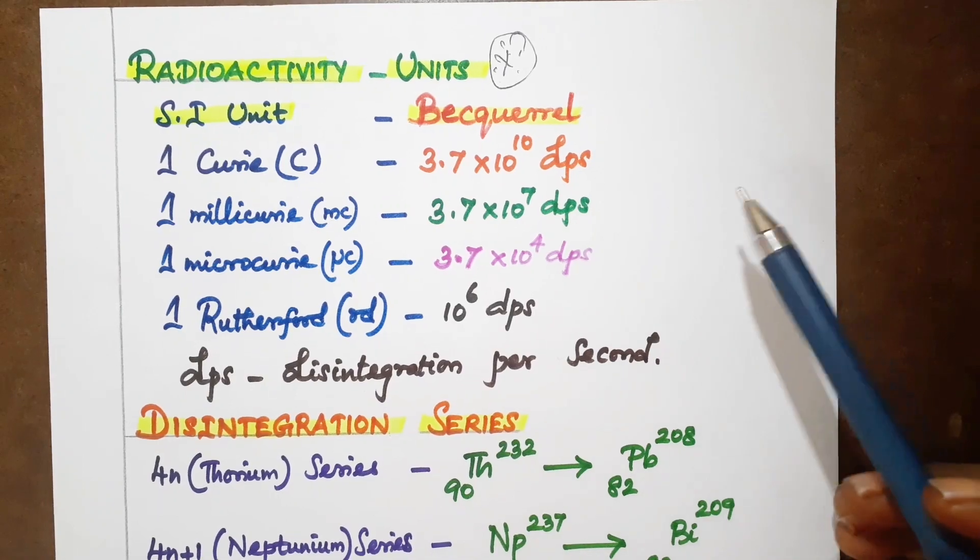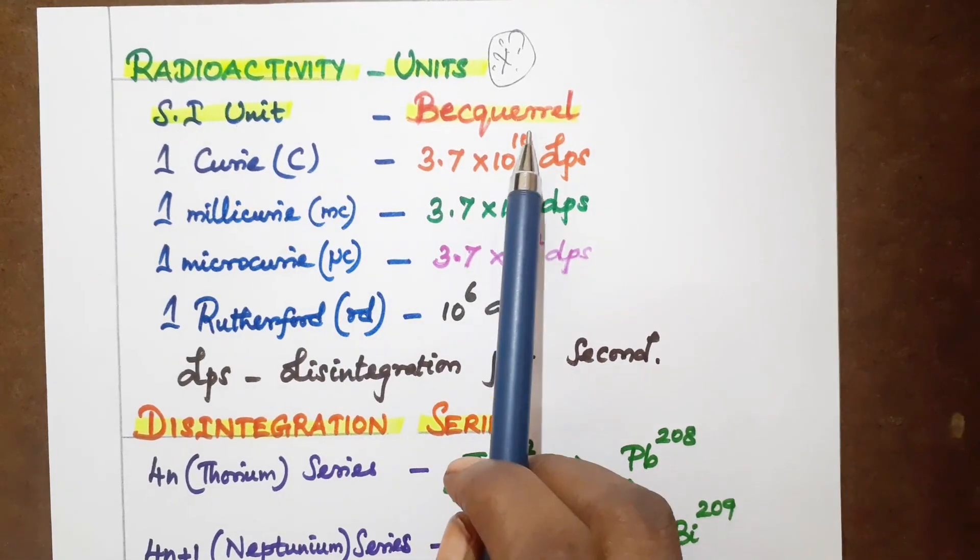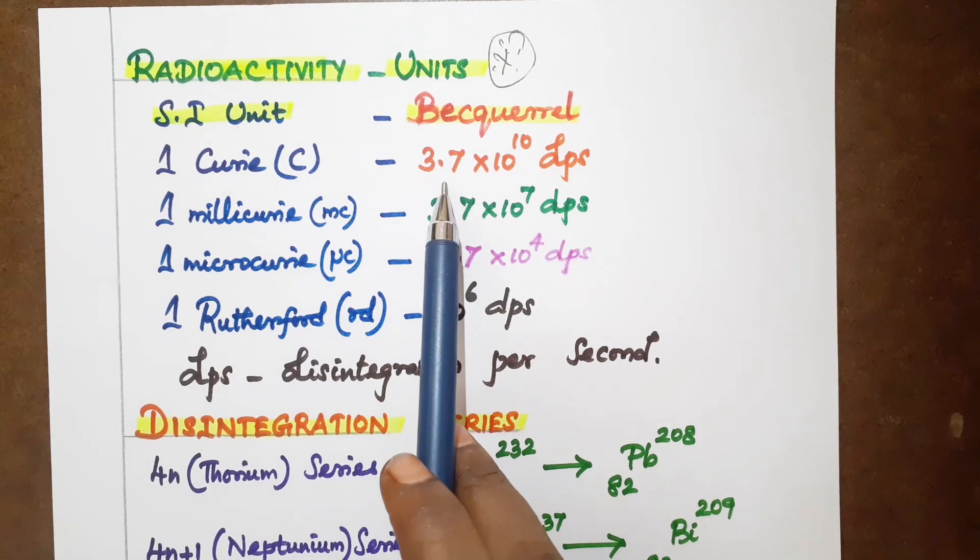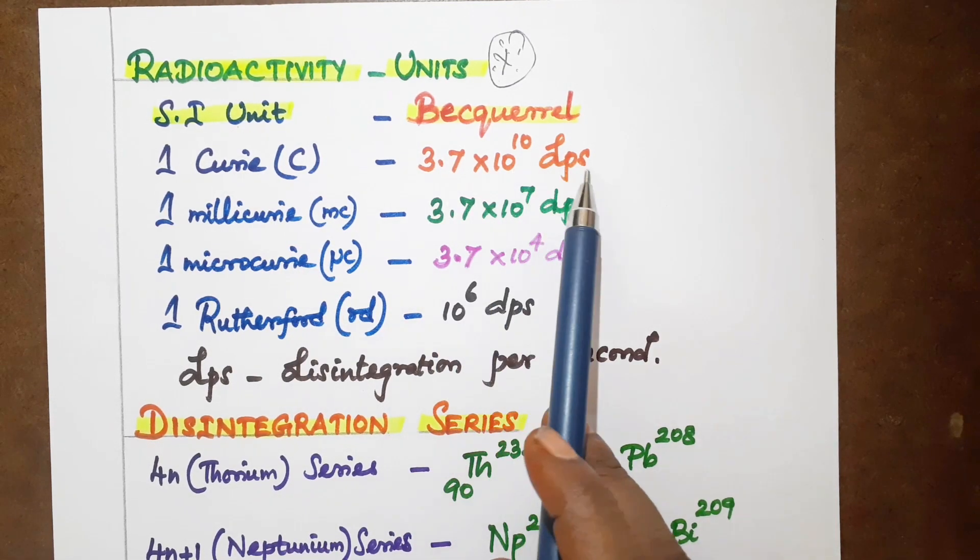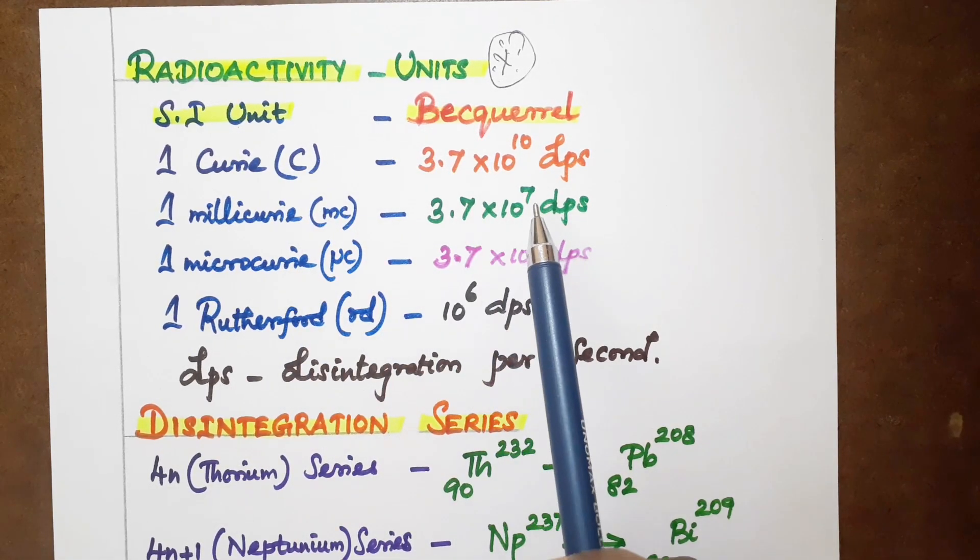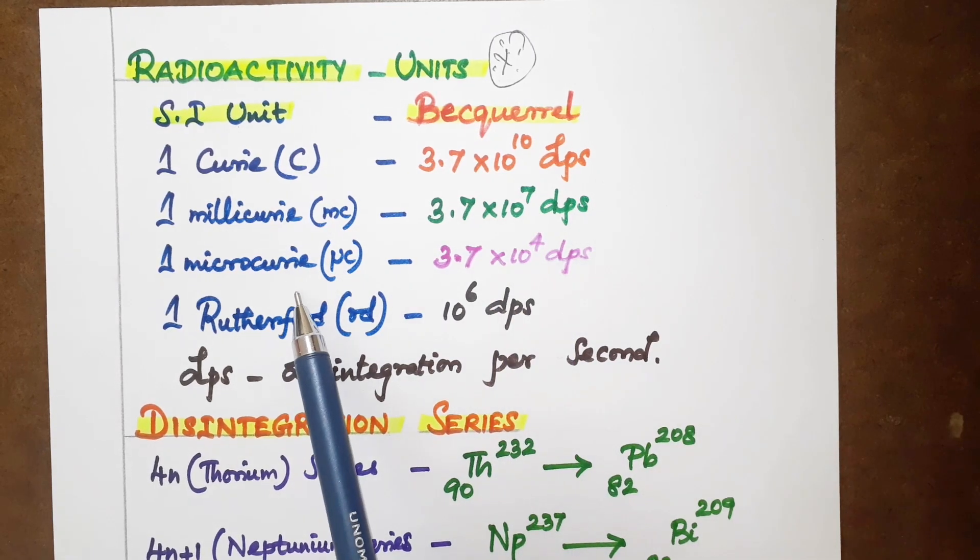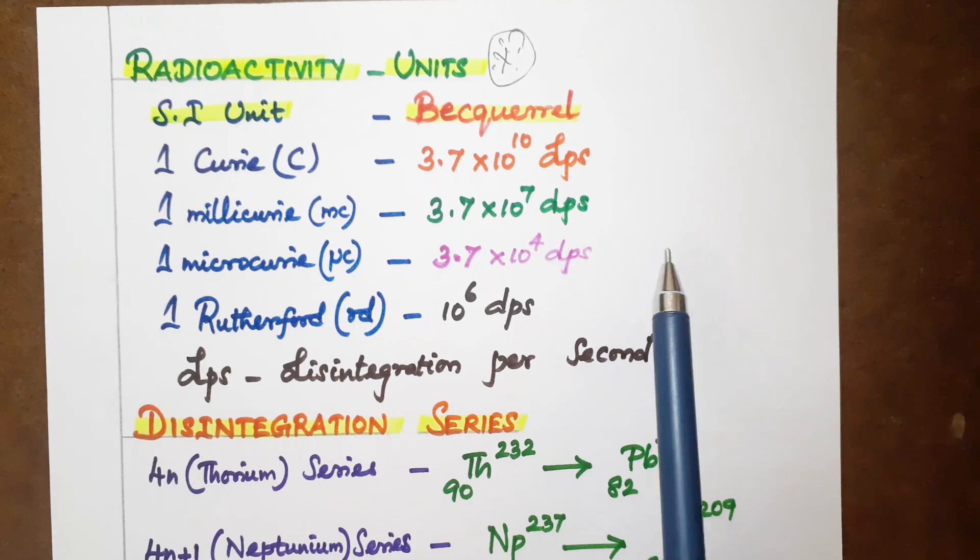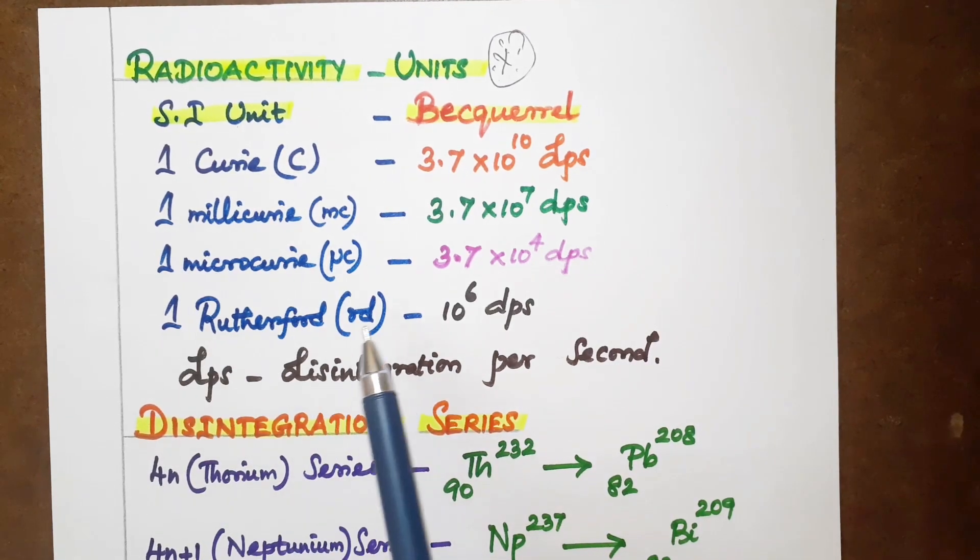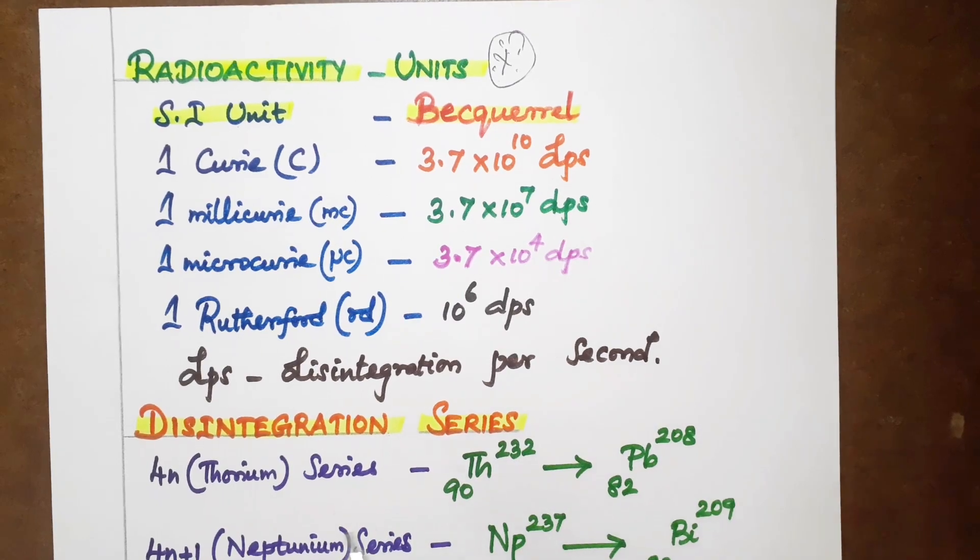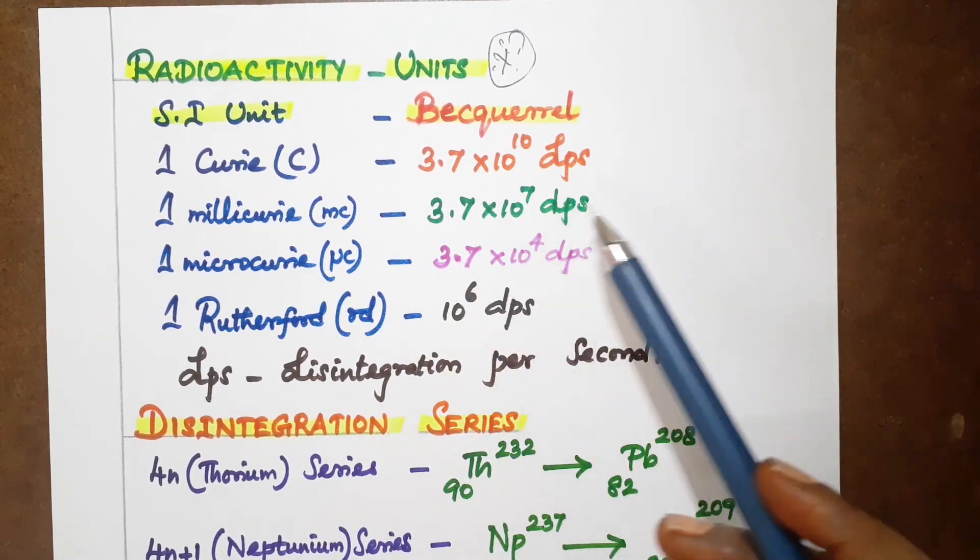Radioactivity units in SI units. 1 curie is 3.7x10^10 DPS, where DPS is disintegration per second. 1 millicurie is 3.7x10^7 DPS. 1 microcurie is 3.7x10^4 DPS. These are the radioactivity units.